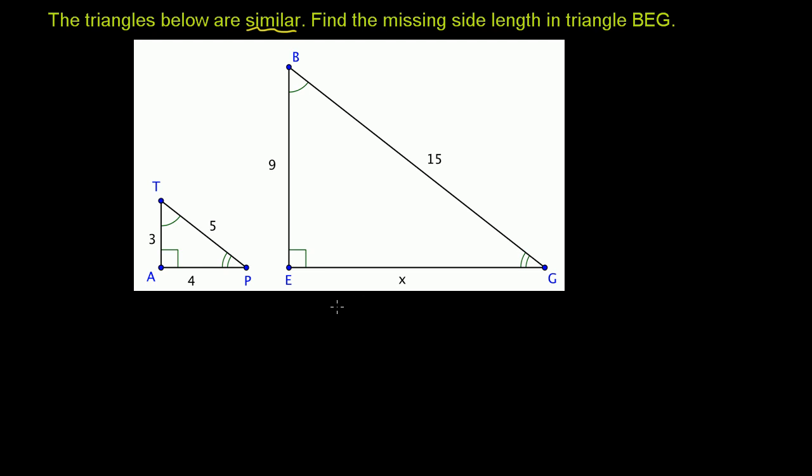So similar triangles, two ways to think about similar triangles. All of the corresponding angles are congruent, and we see that here. This angle corresponds to that angle, they're the same because they have the same one arc. This angle corresponds to this angle, they both have two arcs. And both of these have a measure of 90 degrees, they're both right angles.